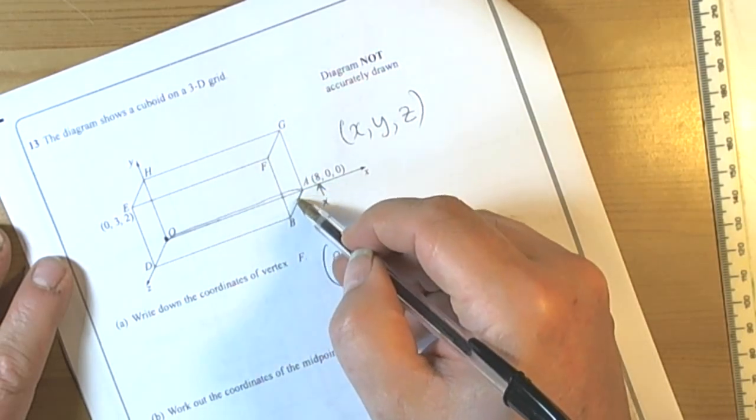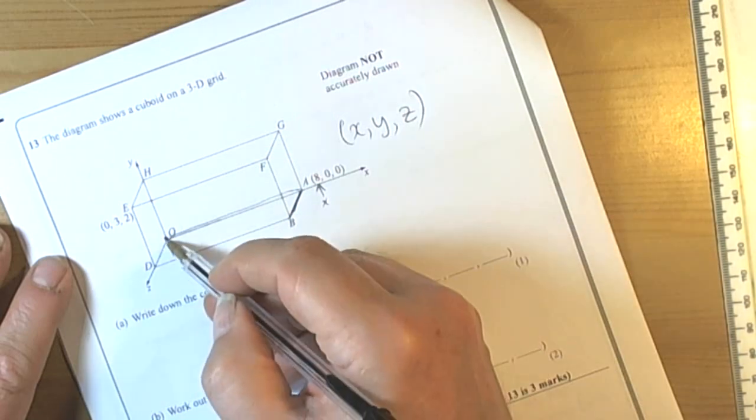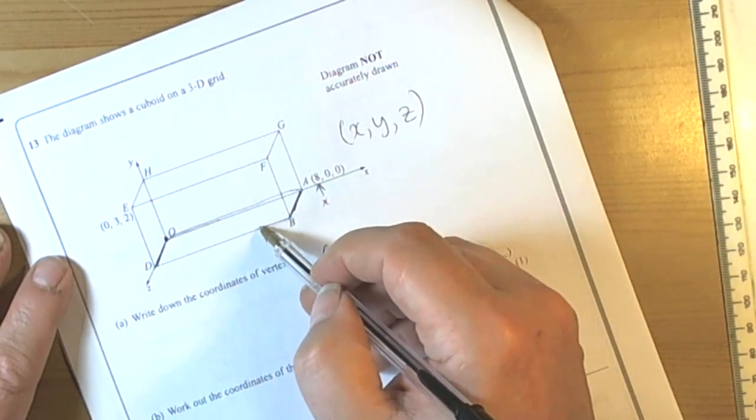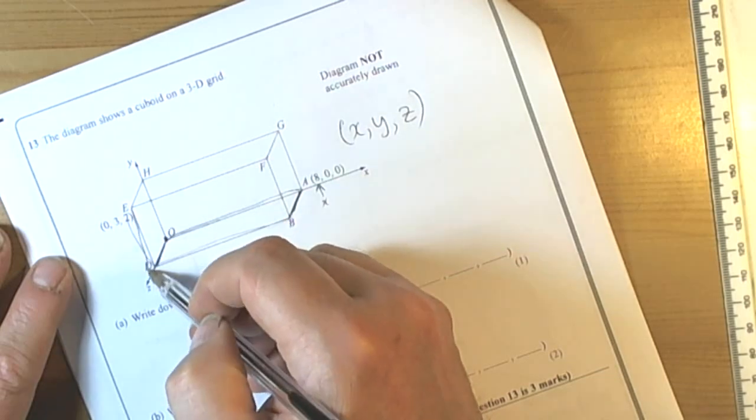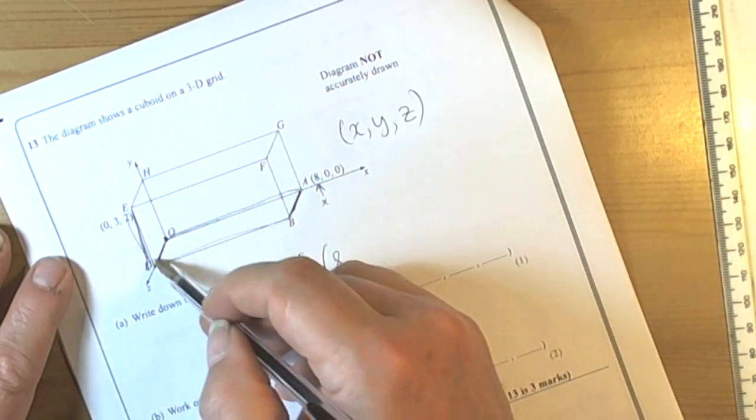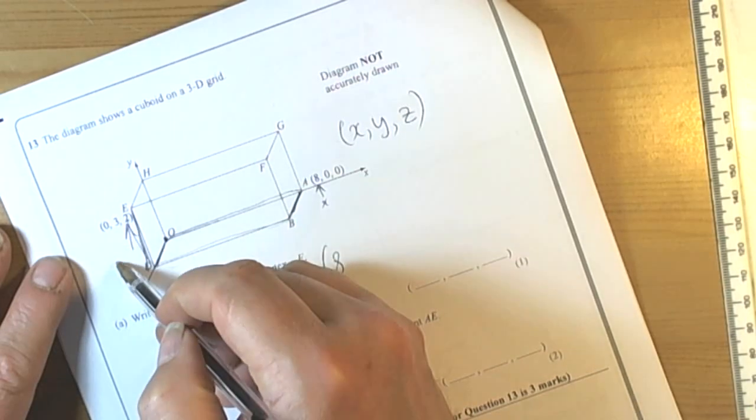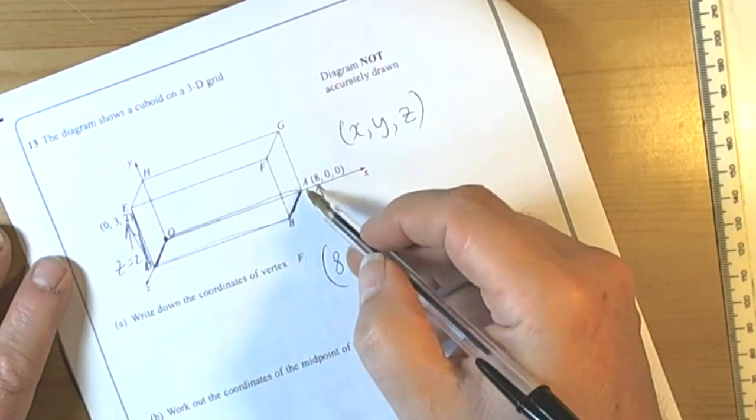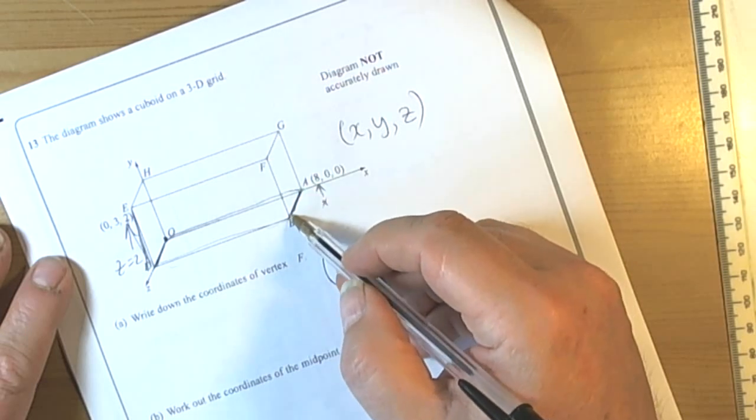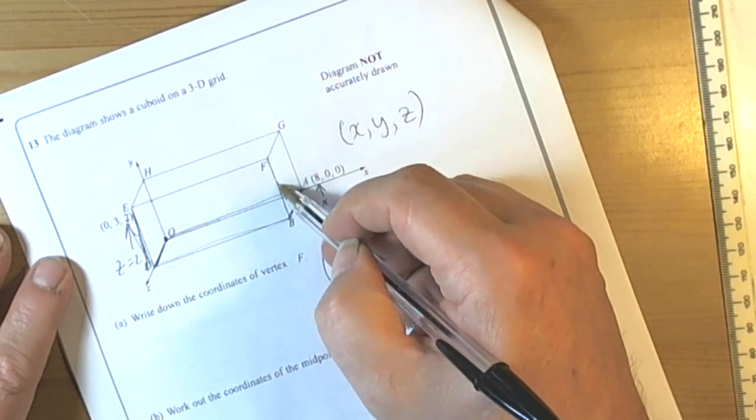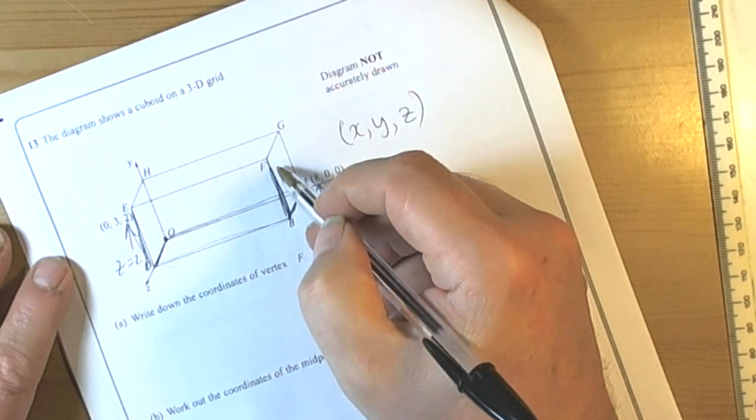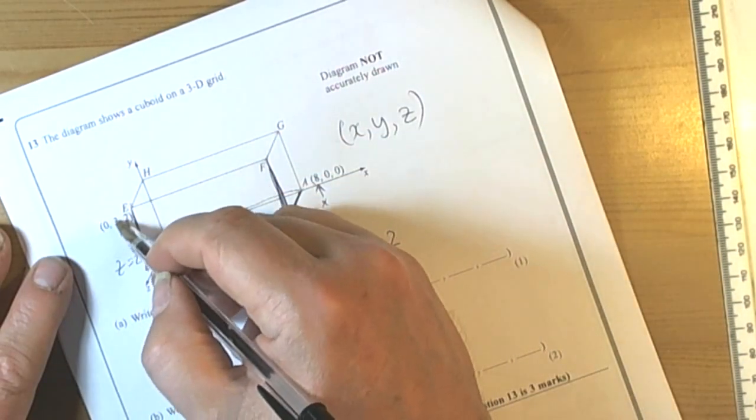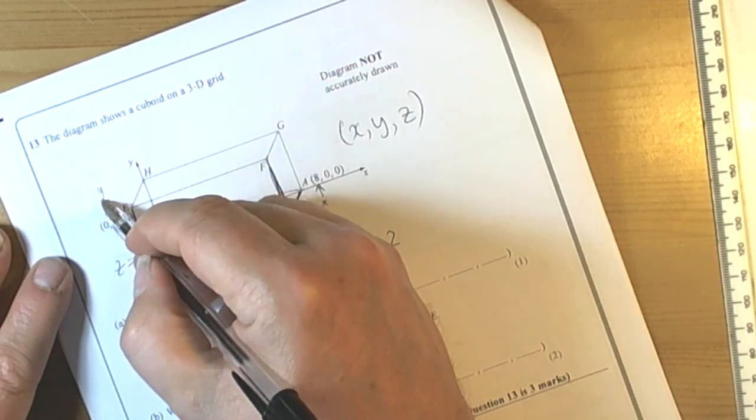To get to F we then came along this one here which is parallel to this one and if we look and go along here we can find out that the Z direction can be given by this 2. So we know the Z coordinate is 2 and we've come up here so we now know that we're on the top of the box and again when we look at a coordinate on the top of the box we can see that the Y is 3.